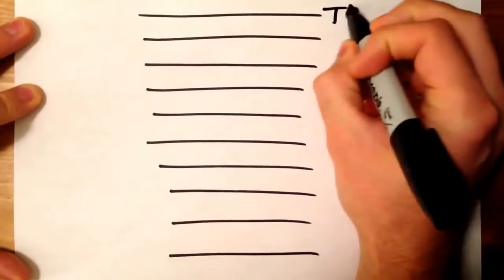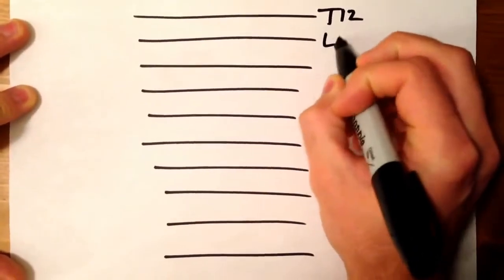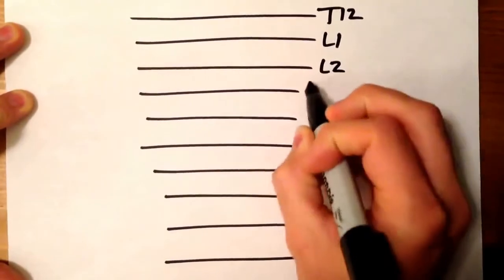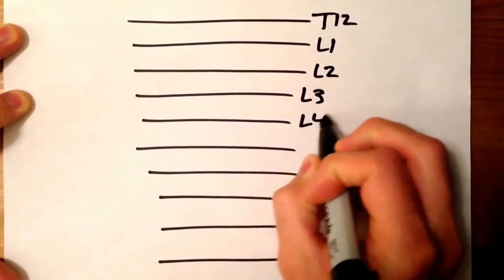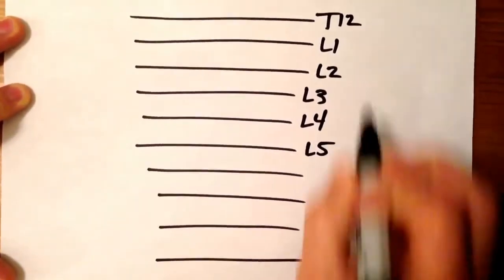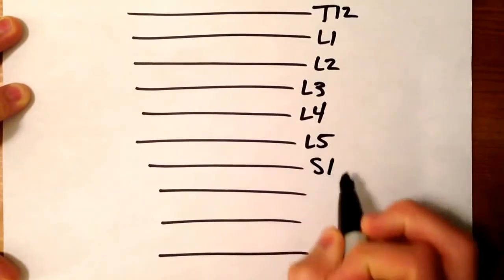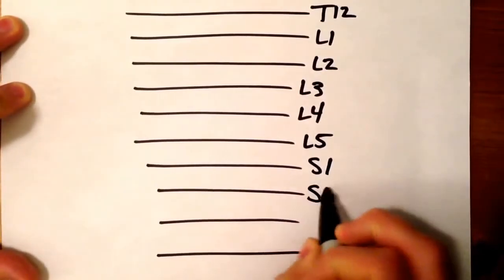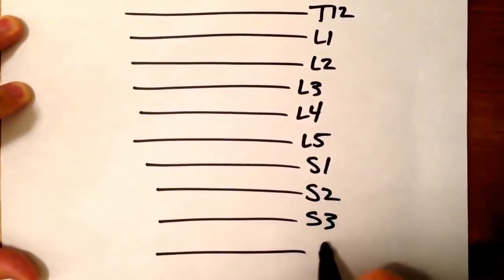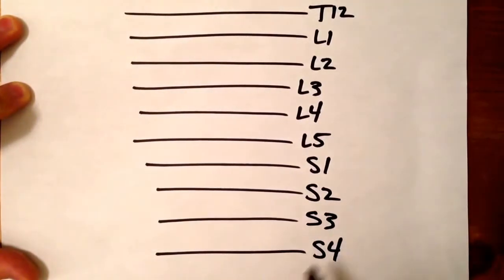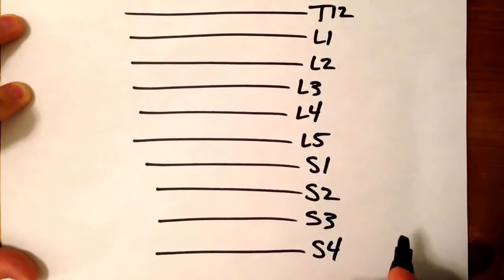And then we're going to label them, T12, L1, all lumbar, then you go to sacral levels. And we'll just end at S4, because past that it's just the coccygeal plexus, we'll just worry about the lumbosacral.